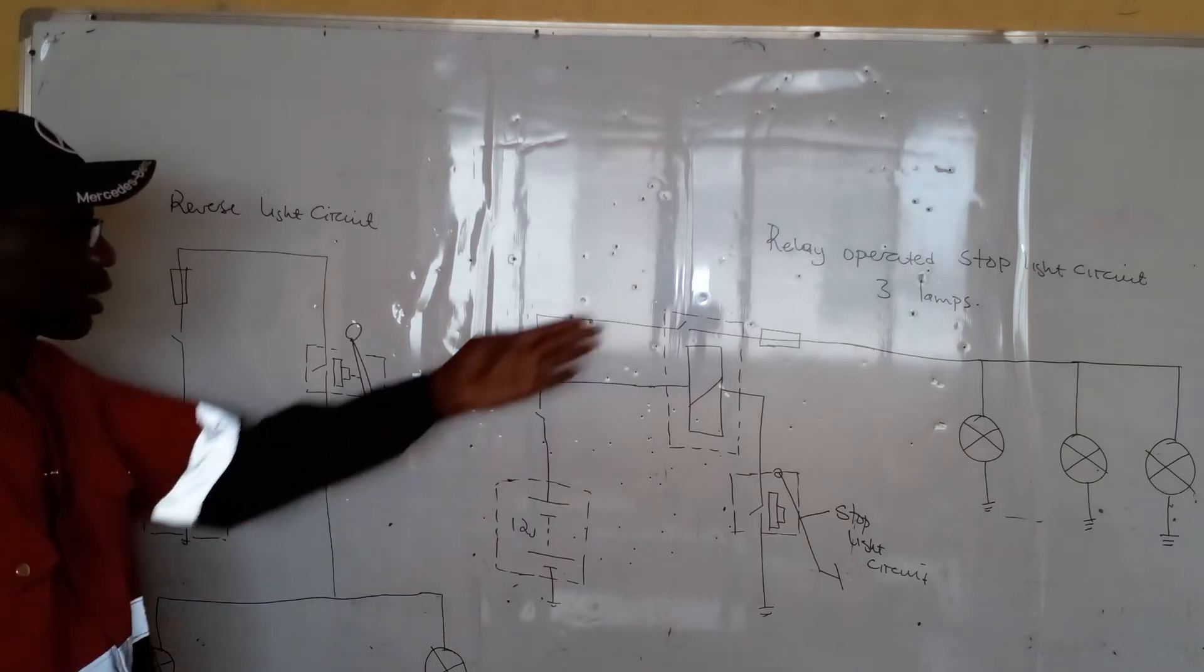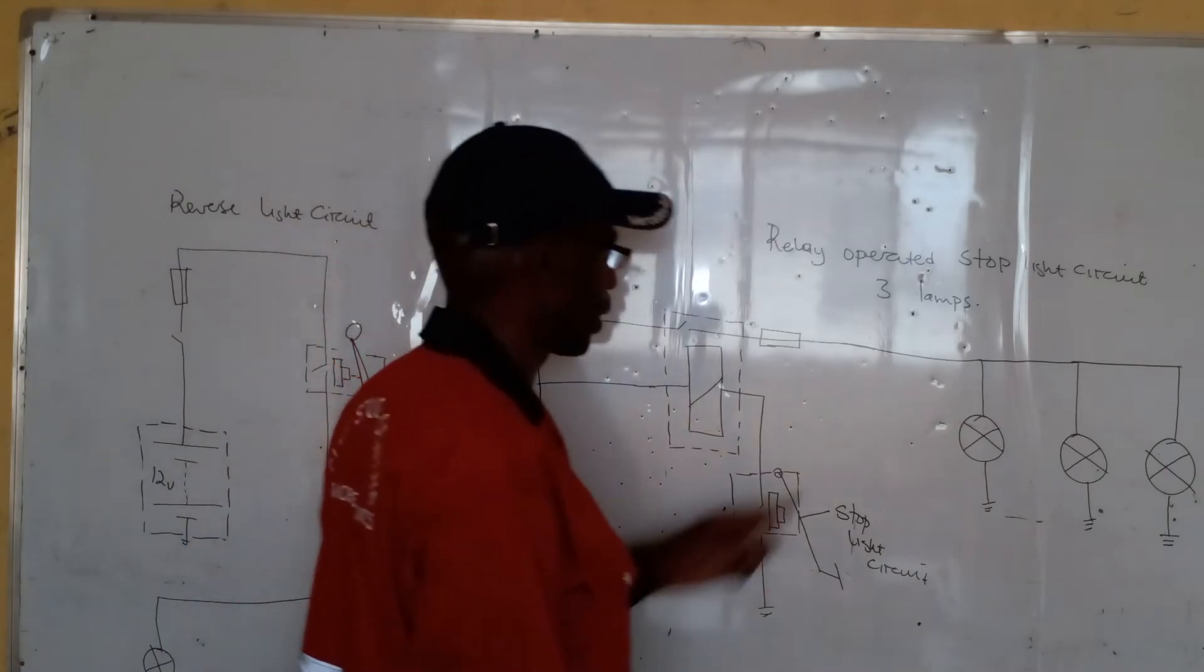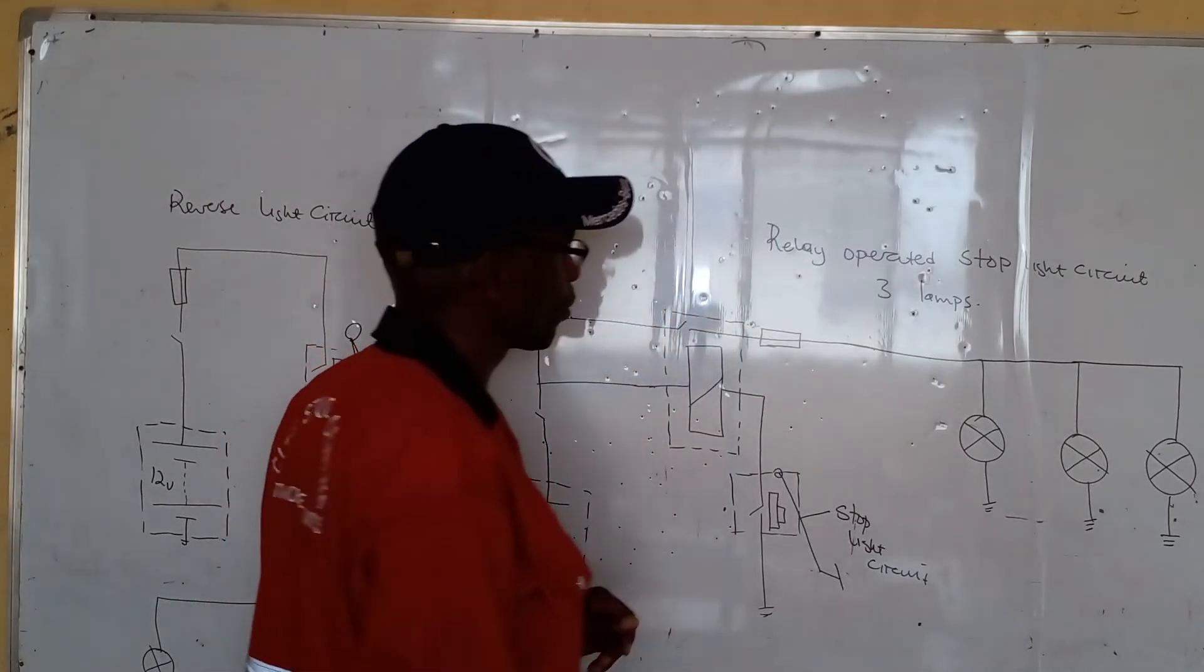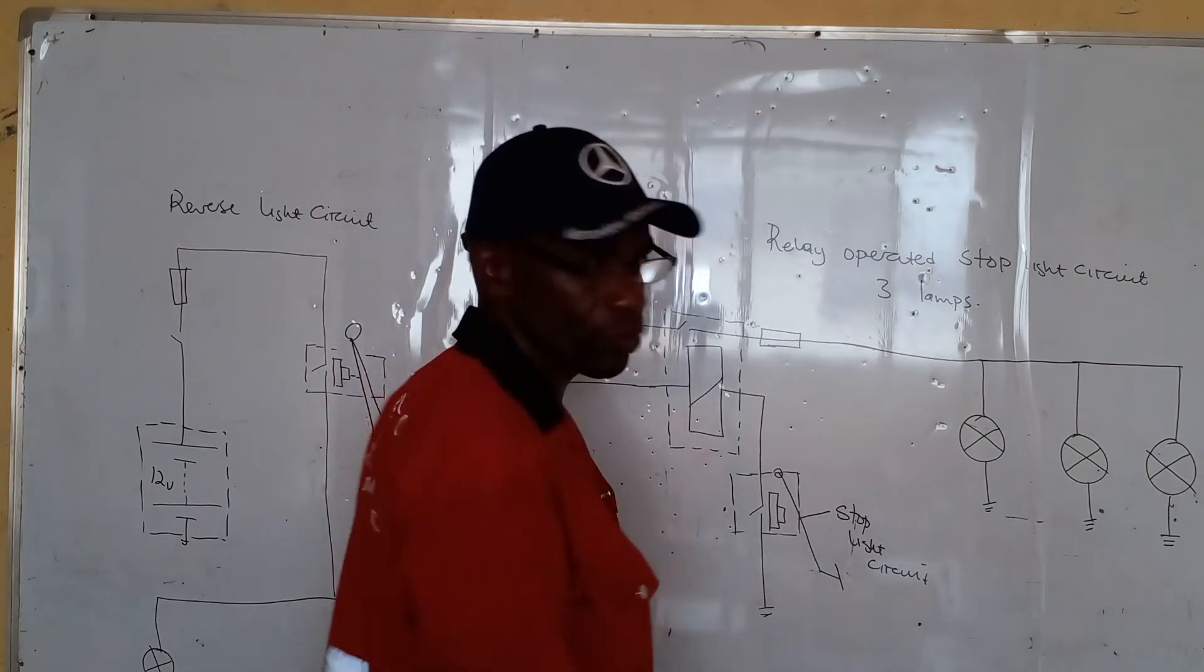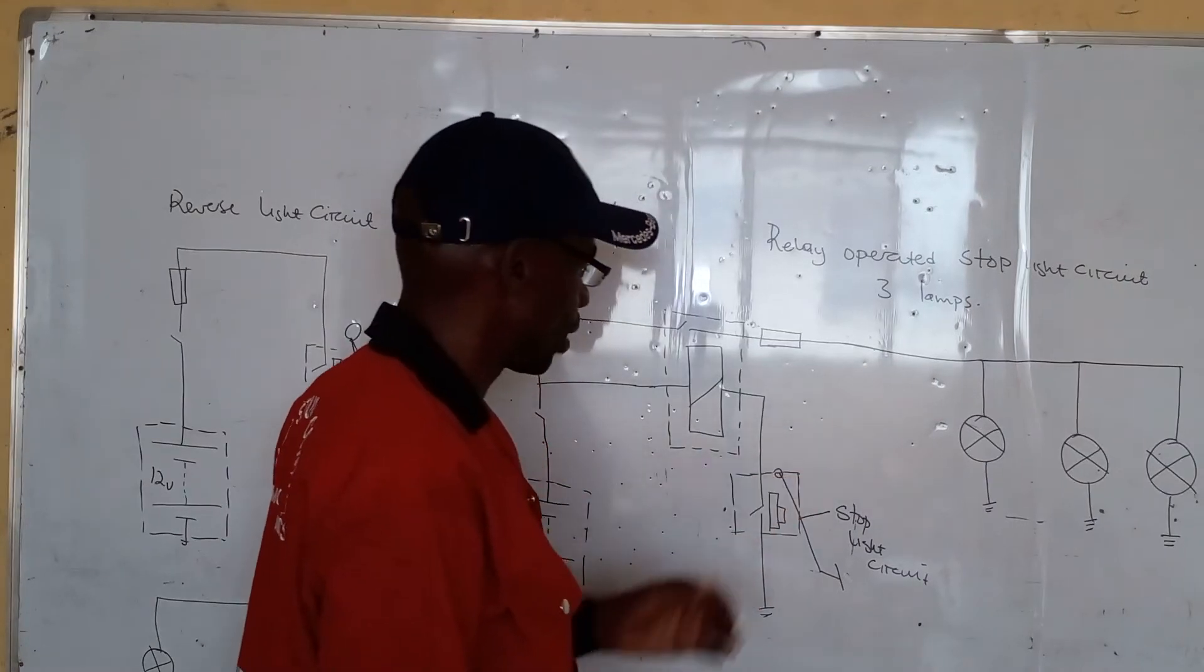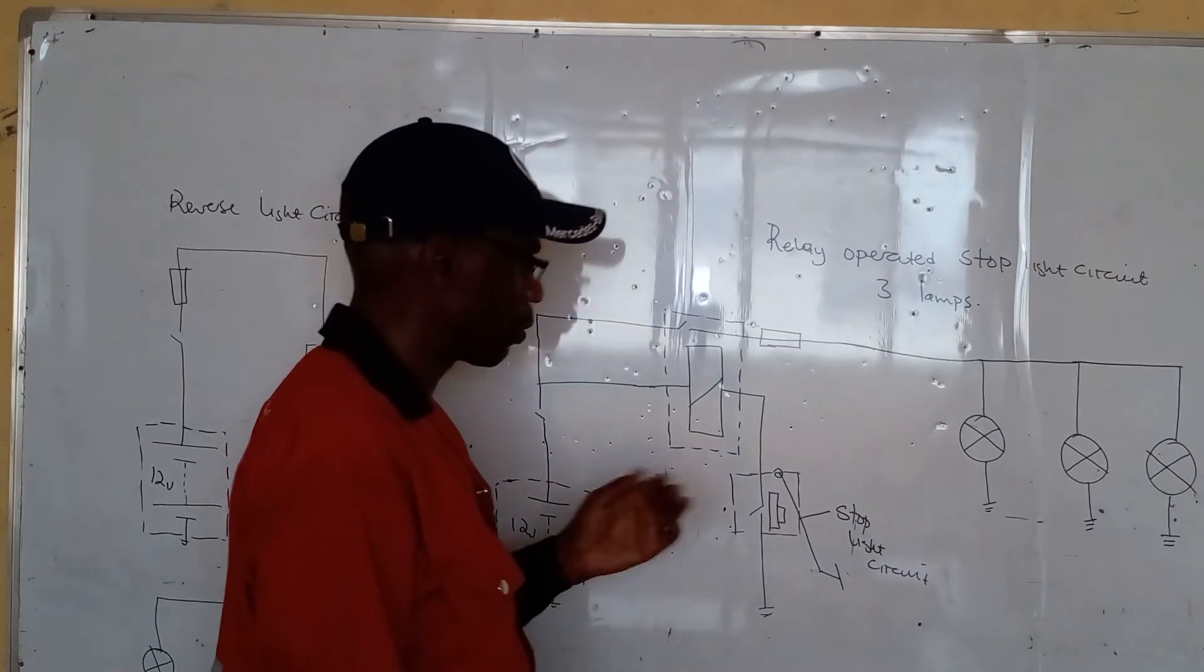Now, let's look at the relay operated stoplight circuit with three lamps. The function of the stoplight circuit is to indicate to road users behind that the vehicle is coming down to a stop or slowing down.